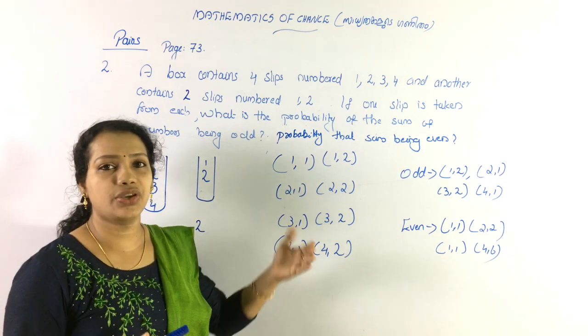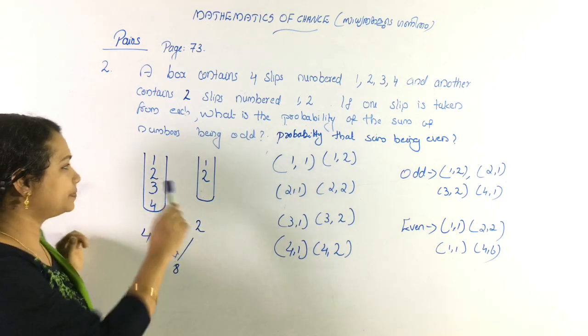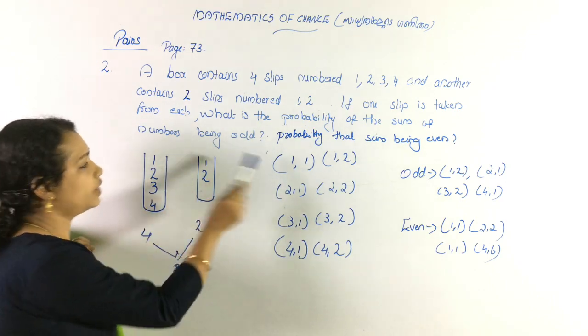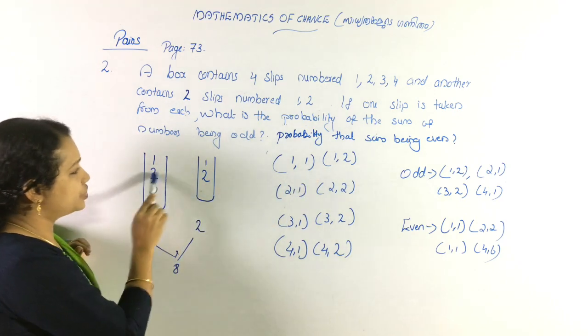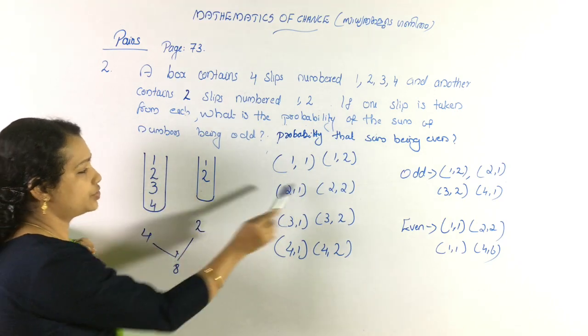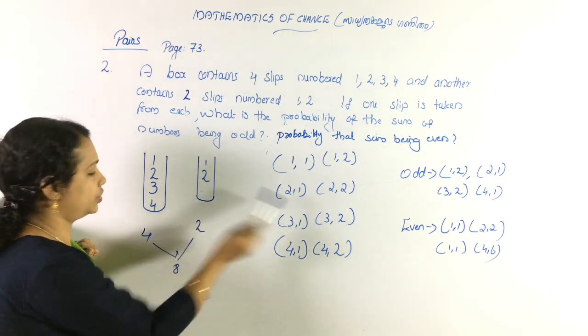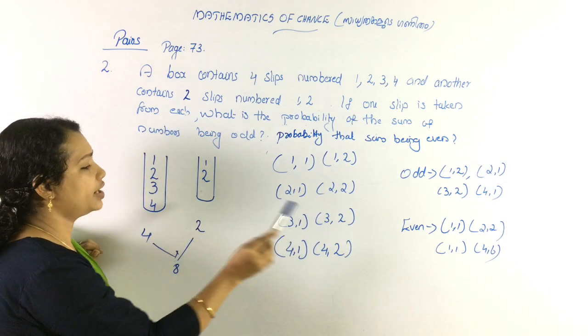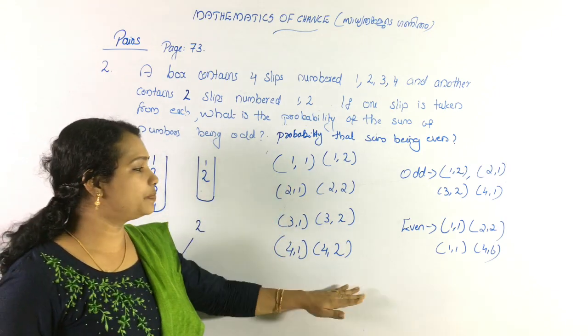The pairs are: (1,1), (1,2), (2,1), (2,2), (3,1), (3,2), (4,1), (4,2). That gives us 8 pairs in total.